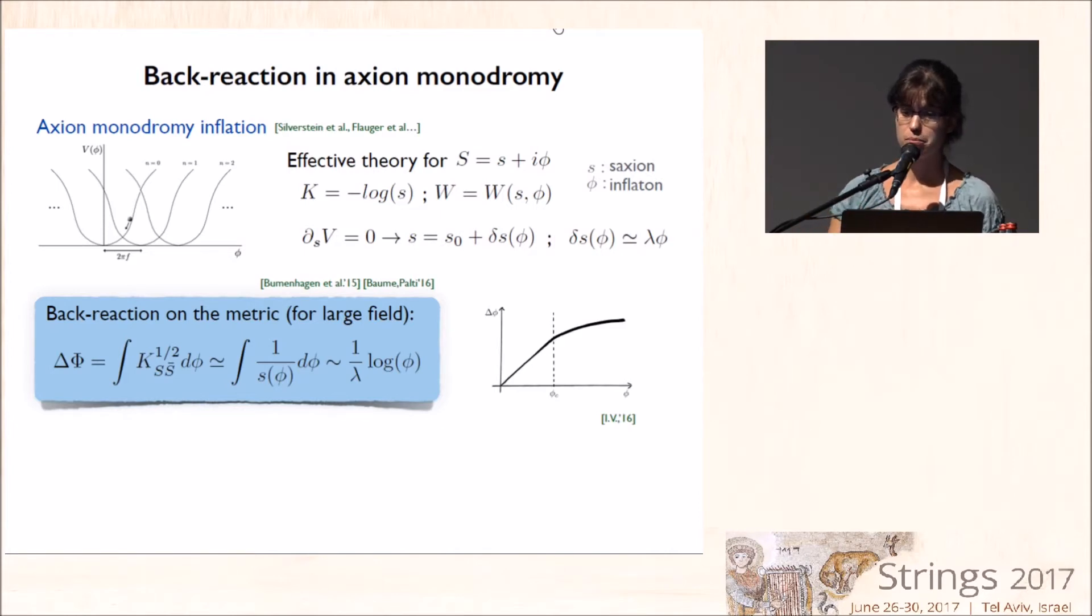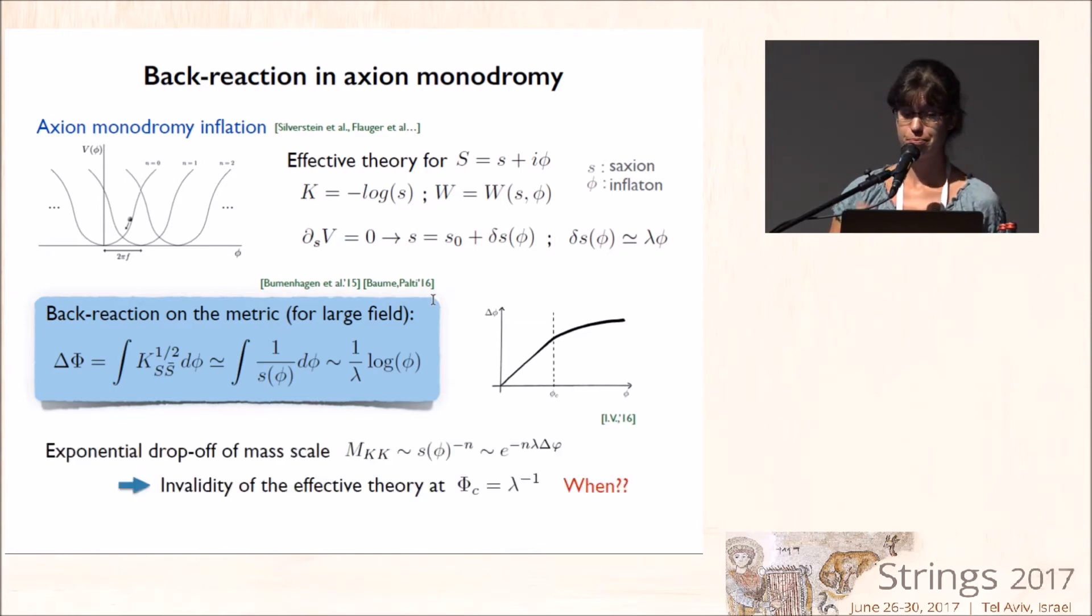So if the saxion is proportional to the inflaton phi for a large field, we will have that the proper field distance of the inflaton will scale as the logarithm of the field itself. And as Eran Palti and his students remarked last year, this behavior is very similar to the one appearing in the swampland conjecture.